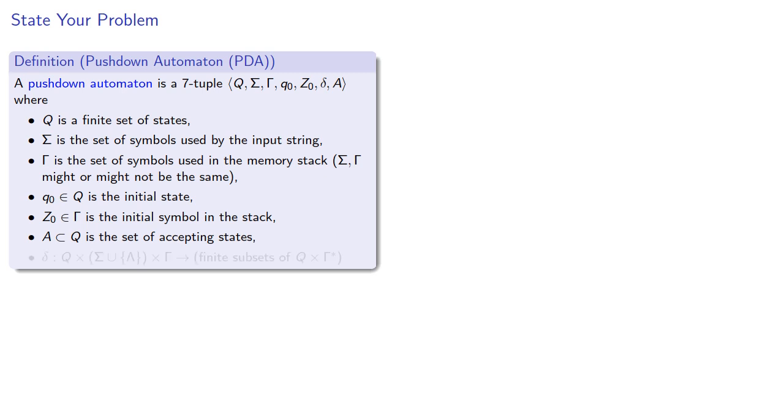and there's a transition rule δ that takes the Cartesian product of states, symbols, and memory symbols, and produces a finite subset of states and memory symbols. Remember this is a non-deterministic automaton, we'll make it deterministic later on.